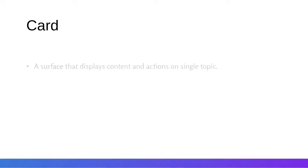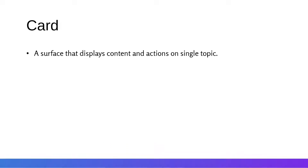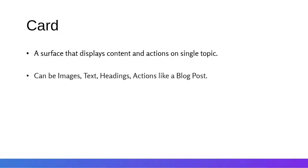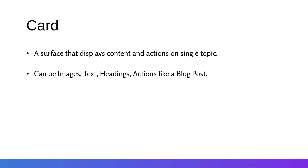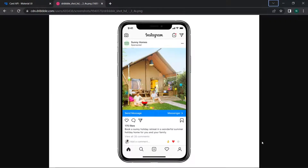The next component we'll be looking at is the Card in Material UI. A card is a surface that displays content and actions on a single topic. The content can contain different images, headings, or action buttons — all related to just a single topic, like a blog post.